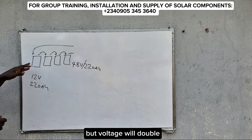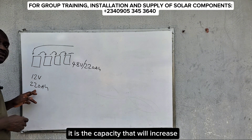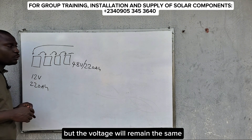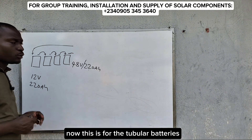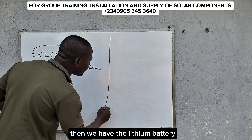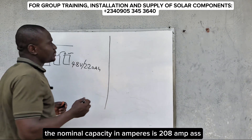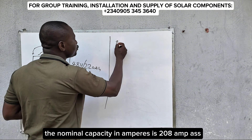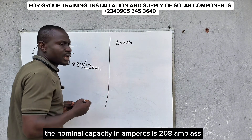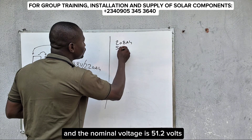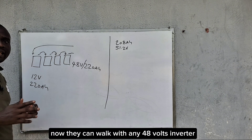If we connect them in parallel, it is the capacity that will increase but the voltage will remain the same. Now for the lithium battery, the nominal capacity in amp hours is 208 amp hours and the nominal voltage is 51.2 volts.